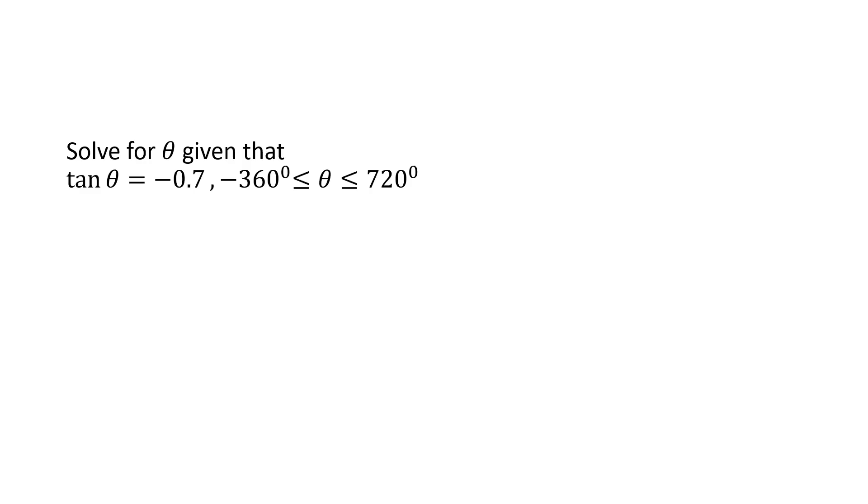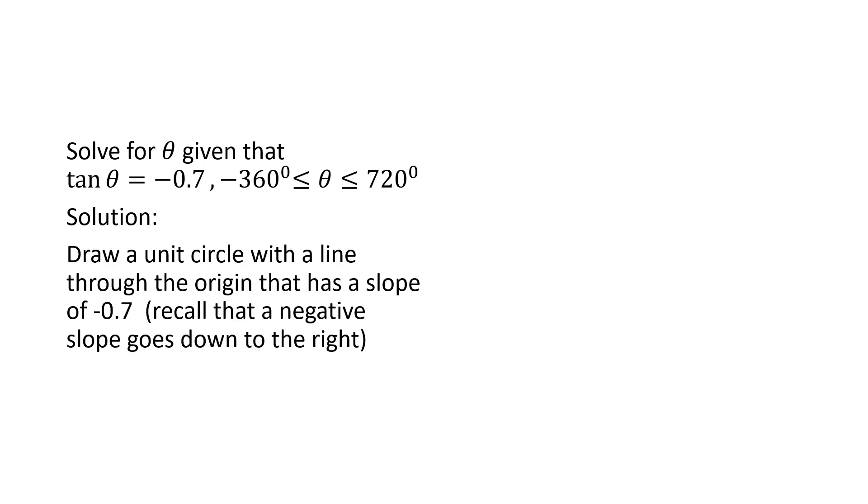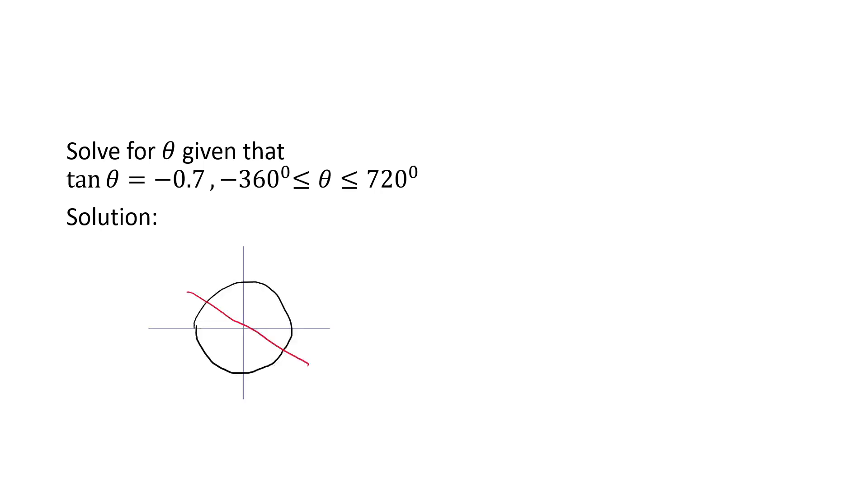But what if we have a negative tan value? Let's say tan theta is negative 0.7. Well, what we do is draw a unit circle, put a line through the origin with a slope of negative 0.7. You can recall a negative slope goes down to the right. So we have an answer that looks like that.